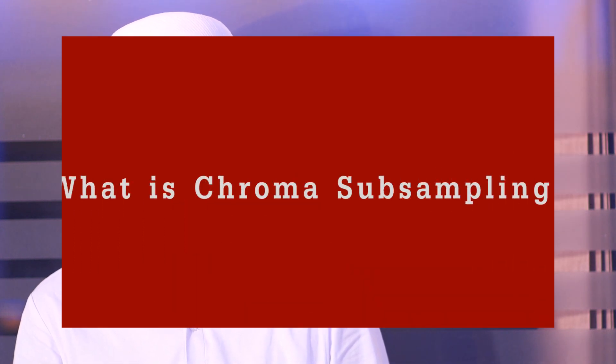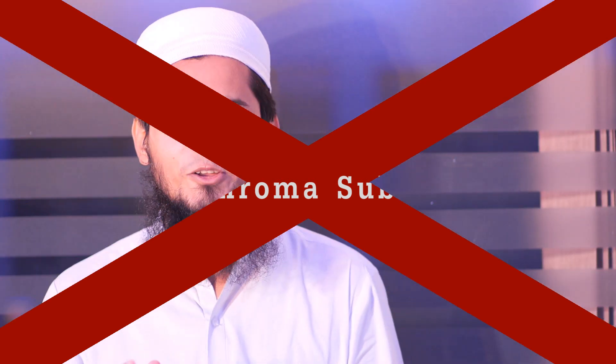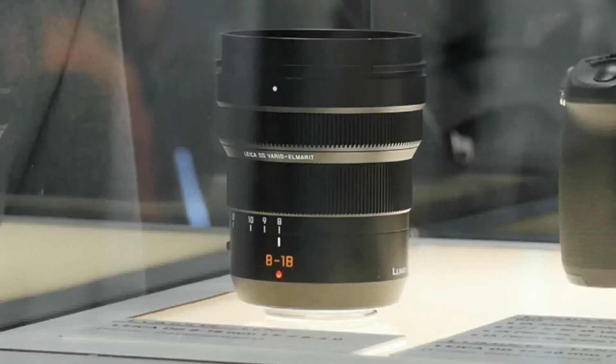When we talk about the Panasonic GH5S 422 feature, this is also an important feature for color data capturing. It's called chroma subsampling, which means we do not need to capture color for every single pixel.